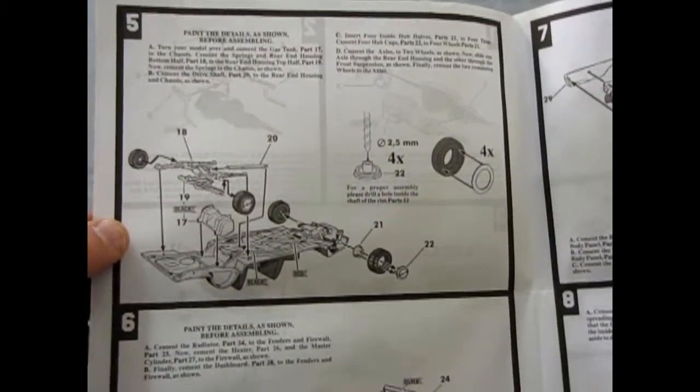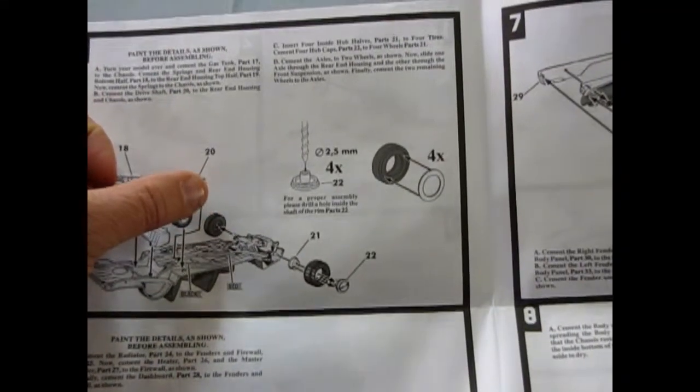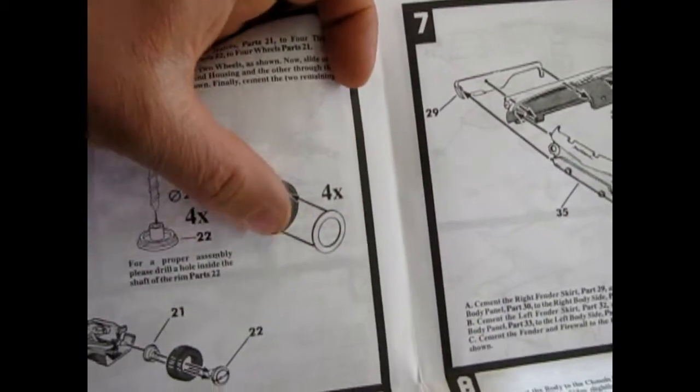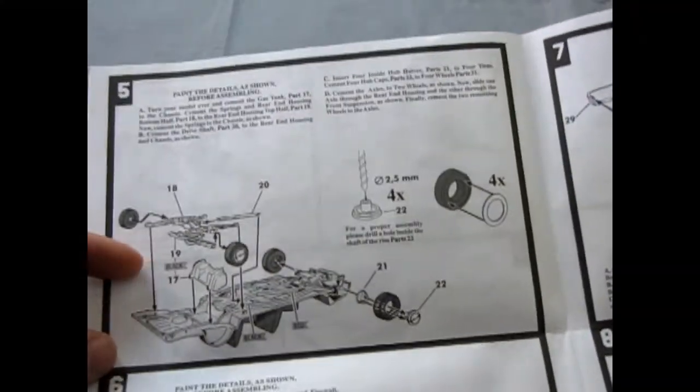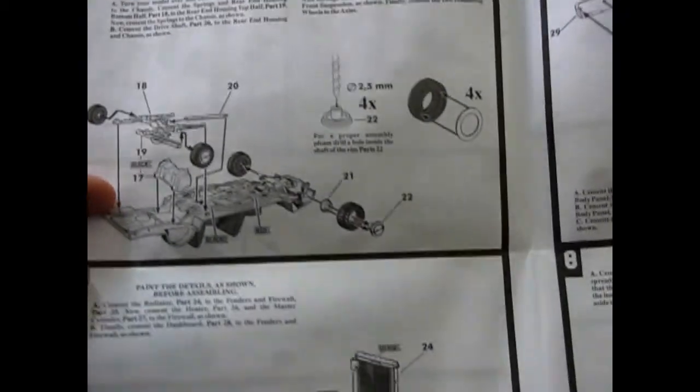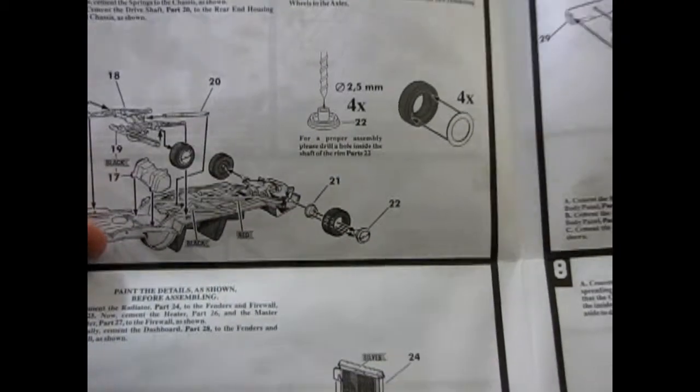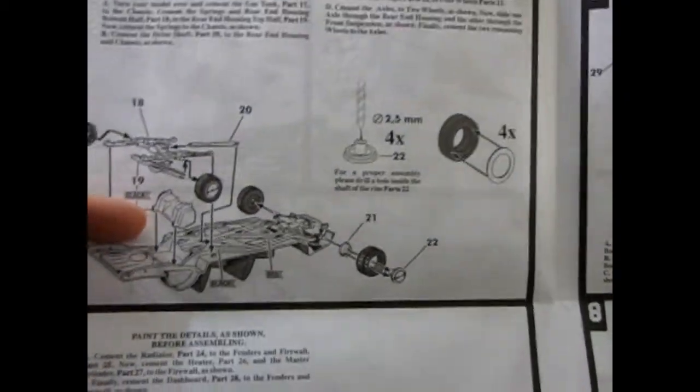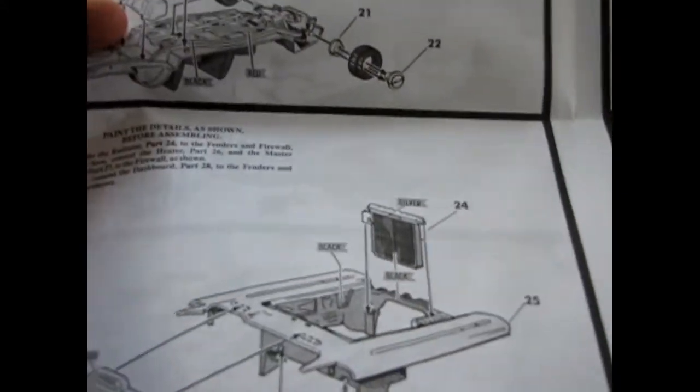So here is the undercarriage. And they're saying, for a proper assembly, please drill a hole inside the shaft of the Rim Parts 22. There's those white wall inserts that plug in that I'm missing for whatever reason. The undercarriage here, the rear differential and spring assembly, plus the fuel tank all drop in. Oh wait, that's not the fuel tank. That's just another hump that would be molded in on the undercarriage on the new kits.